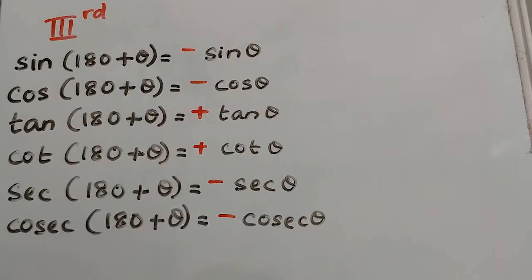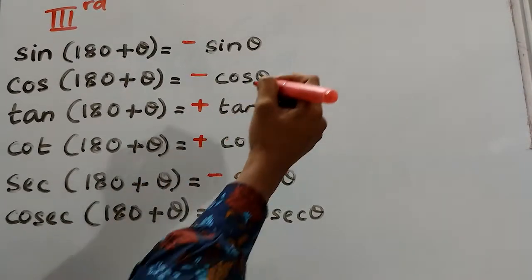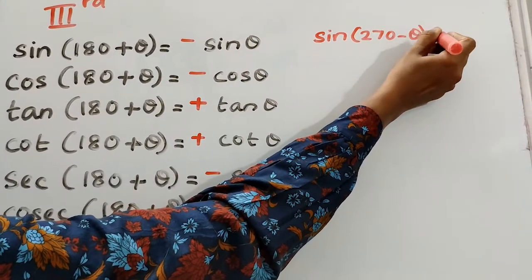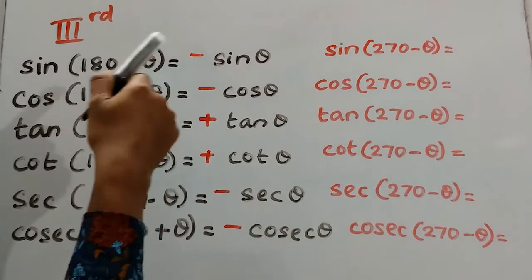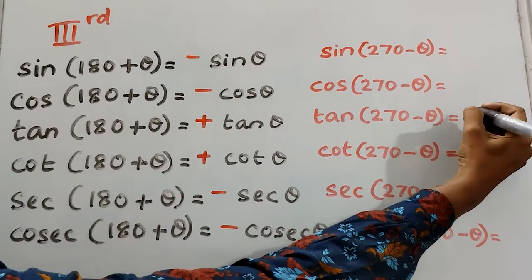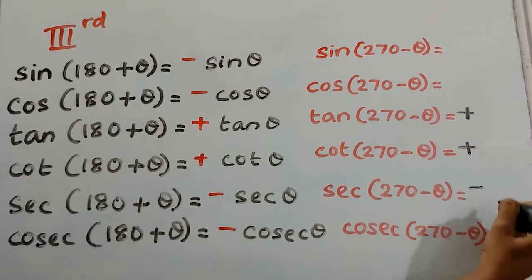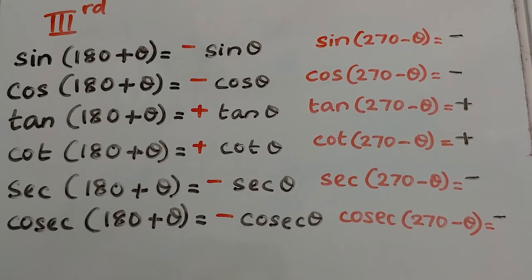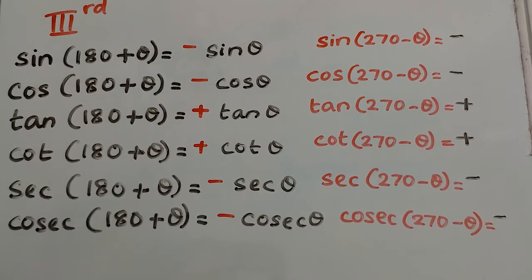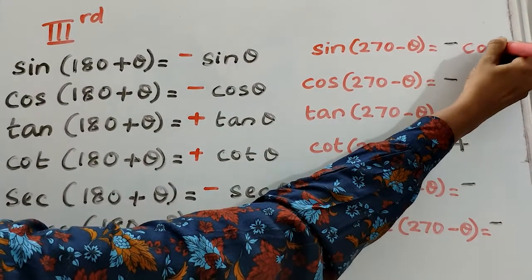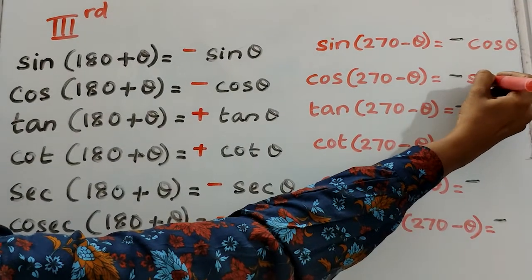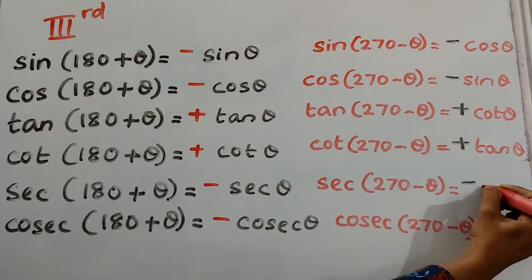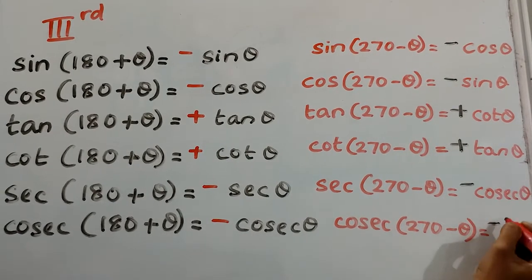One more angle comes in the third quadrant: 270° − θ. We need to find all trigonometric ratios based on 270° − θ. In the third quadrant, only tan and cot are positive; remaining all are negative. 270 is an odd multiple of 90, so we must change the trigonometric ratios: sine changes to cos, cos changes to sin, tan changes to cot, cot changes to tan, sec changes to cosec, cosec changes to sec.